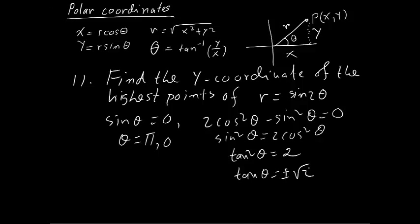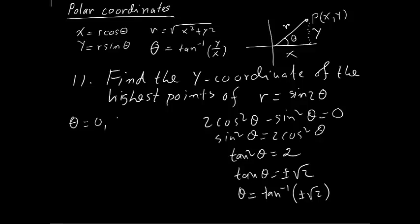Once we get this, we need to do further simplifications to see where we're getting the maximum value. You can find theta equals tan inverse plus or minus square root of 2. So we got theta equals 0, theta equals pi, and tan inverse plus or minus square root of 2.